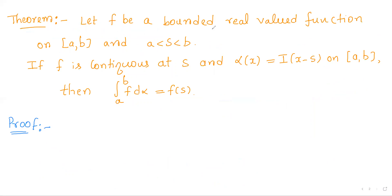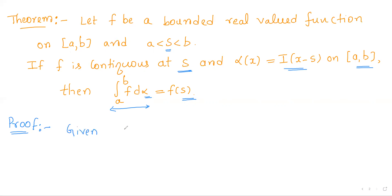The result is: let f be a bounded real-valued function on the closed interval [a, b], and let s be any point in between a and b. If f is continuous at s and α(x) = i(x − s) on [a, b], then we have to prove that the Riemann-Stieltjes integral of f over [a, b] with respect to α equals f(s).